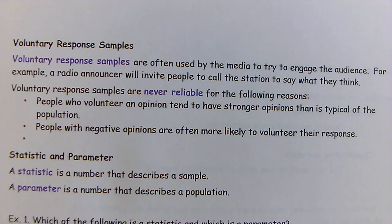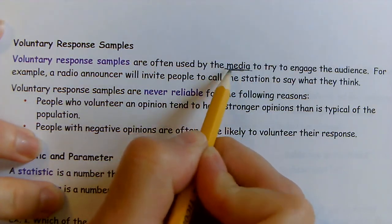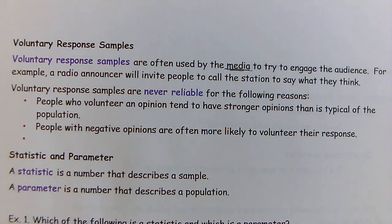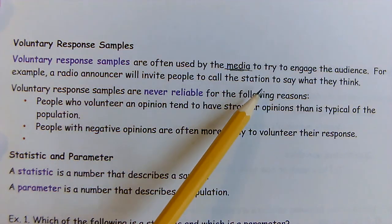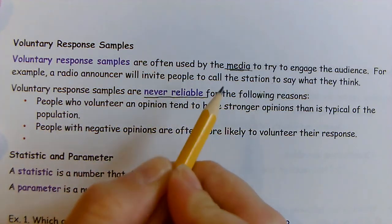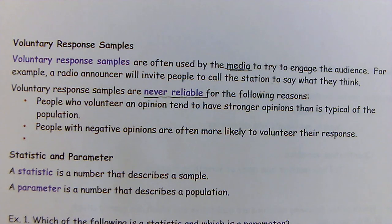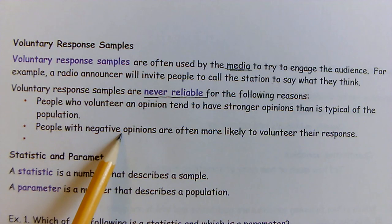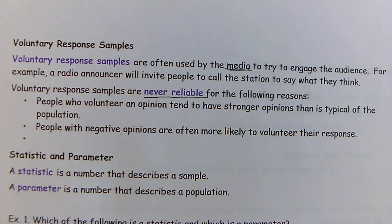Voluntary response samples are often used by the media — call in to a radio station, text your vote to a TV show — to engage the audience. However, voluntary response samples are never reliable. People who volunteer an opinion tend to have a stronger opinion than is typical of the population. People with negative opinions are often more likely to volunteer their response. Plus, it doesn't represent the entire population — it's just who happens to be watching.